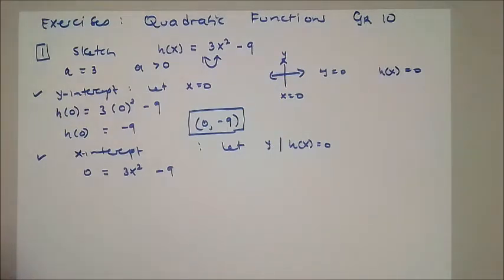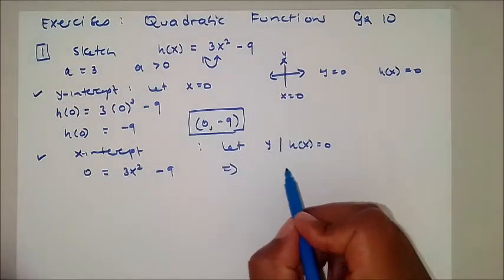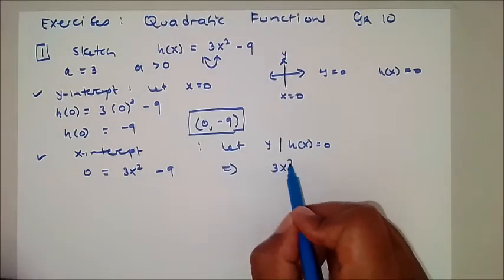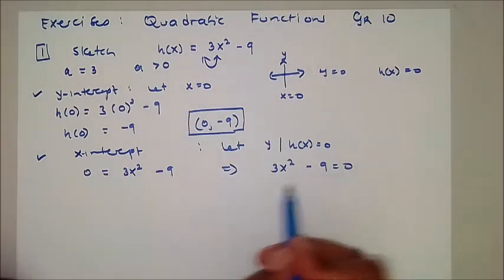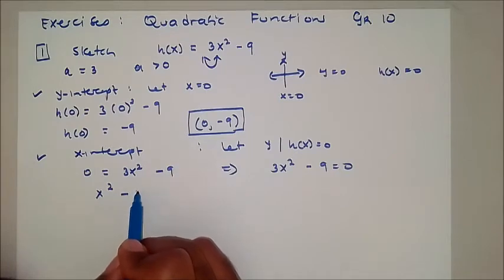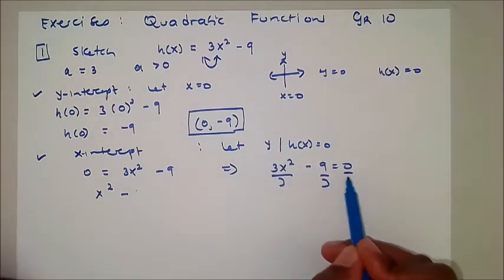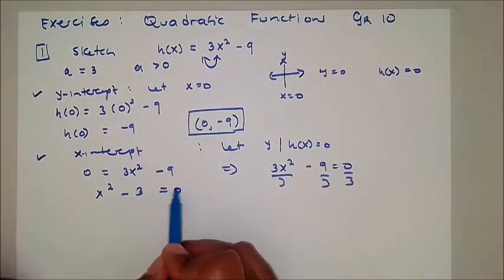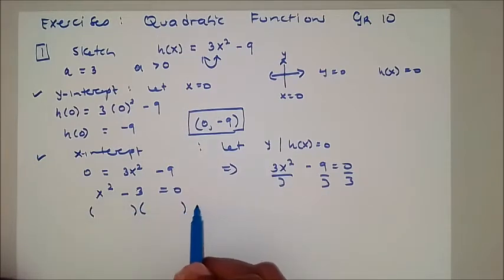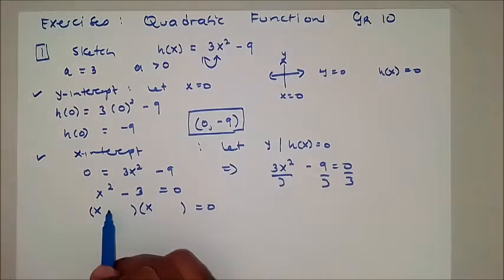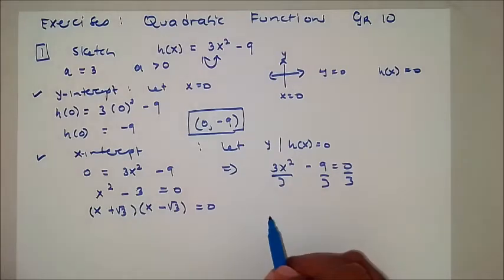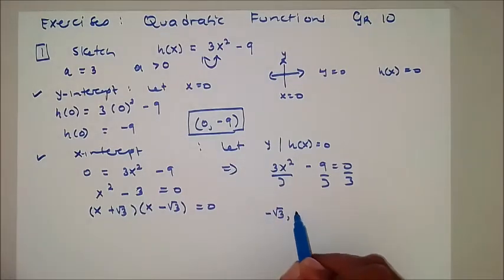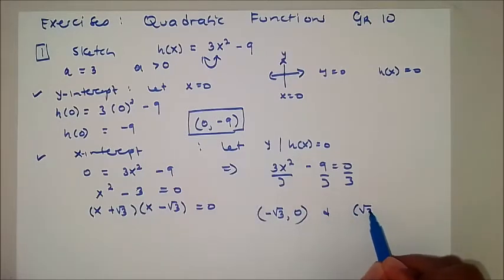Now we are solving for x. There are many ways to solve this. We divide everything by 3: 3x squared minus 9 equals 0 becomes x squared minus 3 equals 0. From here we get x equals plus the root of 3 and minus the root of 3. So the x-intercepts are (-√3, 0) and (√3, 0).